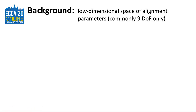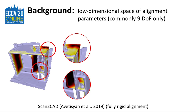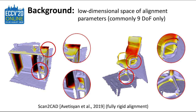However, existing methods only search for optimal alignments by optimizing over a comparatively low-dimensional space of parameters — for instance, over 9 degrees of freedom such as translation, rotation, and scale. As many real-world models simply do not exist in standard 3D shape collections such as ShapeNet, this significantly limits the fidelity of the fits, leaving large scanned areas not covered.